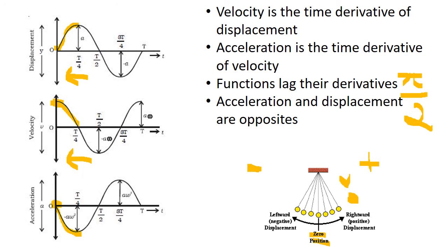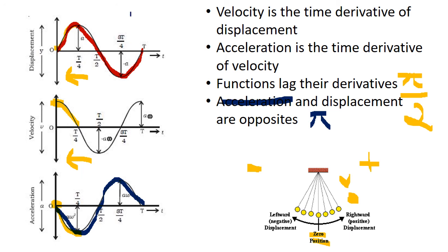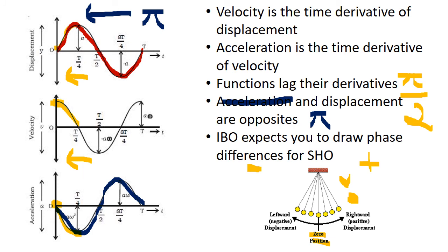Acceleration and displacement are opposites: my displacement graph was a positive sine function, and my acceleration graph is a negative sine function. These two are out of phase with each other by a full pi — acceleration leads displacement by pi. So if given a displacement graph and I need to make acceleration, I would shift displacement over by half of its period, or pi. The IBO expects you to be able to draw all of these phase differences for any type of simple harmonic oscillator. Just remember the derivative is ahead by pi over two — move the original graph to the left by pi over two. Acceleration and displacement are separated by a phase difference of pi.